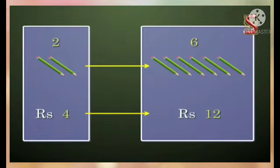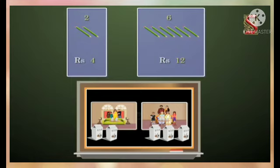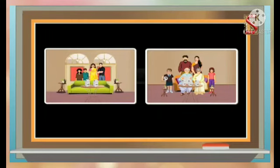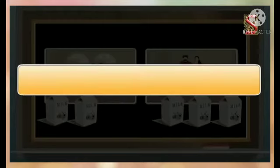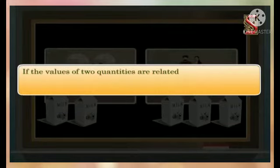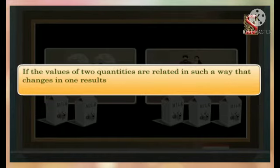These are different situations we come across in our day-to-day life. We saw that in all the above situations, a change in one quantity resulted in a change in the other quantity also. So we can say that if the values of two quantities are related in such a way that changes in one result in a corresponding change in the other.